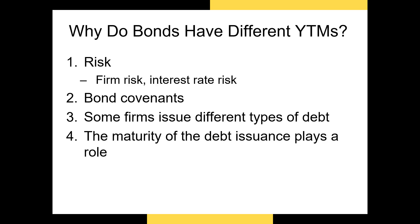Now let's talk about why some bonds have different yields to maturity. There are many reasons why two bonds might have different yields, but the most likely explanation is because one bond is more risky than the other. For example, if the government of Venezuela is issuing bonds and the US government is issuing bonds, investors would require a higher interest rate to lend to the Venezuelan government because it's much more likely to default.